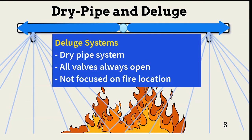Deluge systems are constructed like dry pipe, but with all valves always open. Instead of water being delivered only to the location of the fire, it's dropped over an entire area. An example would be a plant floor where fire spread must be controlled.